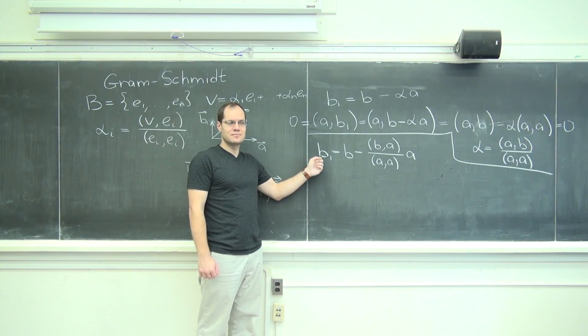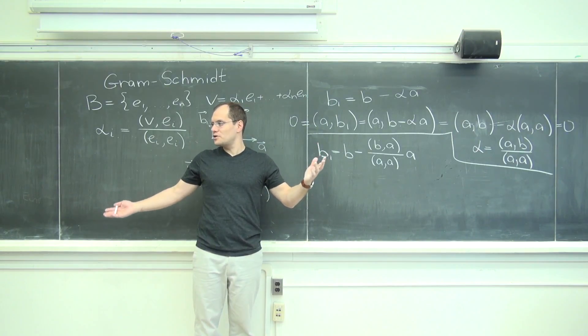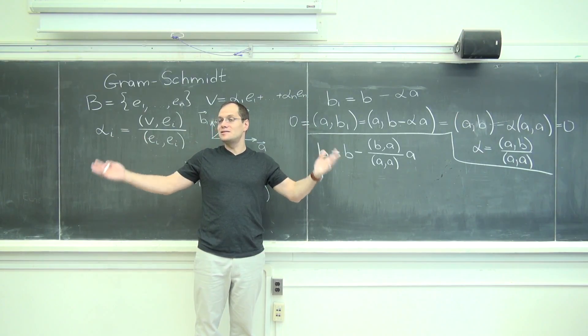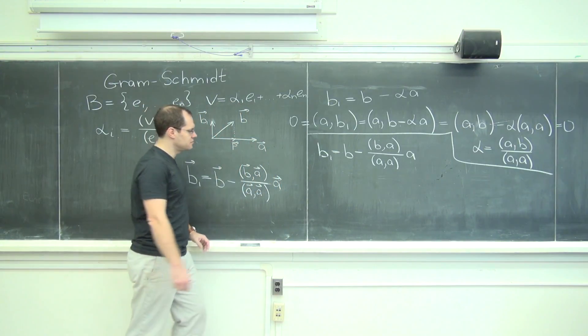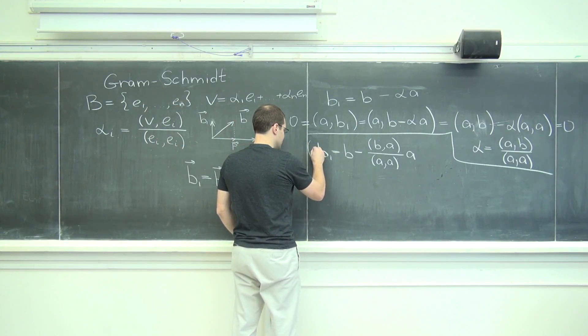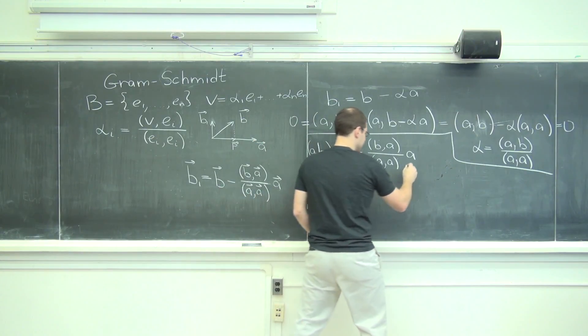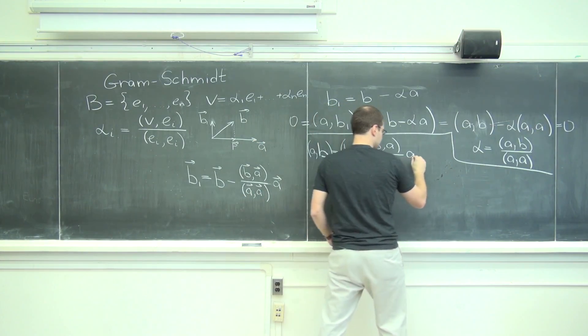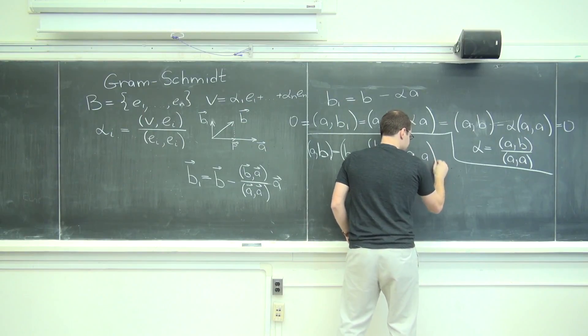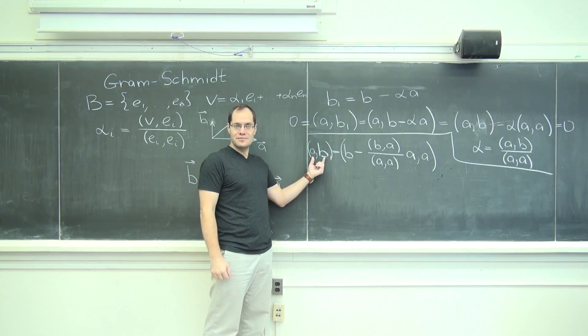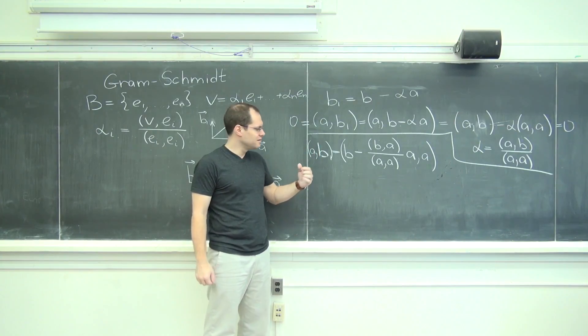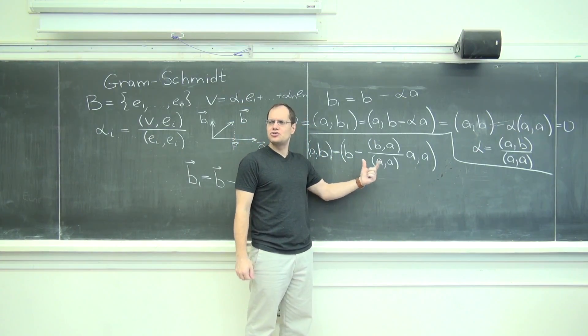How would you do it? Well, you would dot it with a and see what happens. Let's dot it with a. And see what happens when I dot it with a. I'll do it right in place, and if it's messy, it's messy. On the left-hand side we have a dotted with b1. We're wondering what that is.